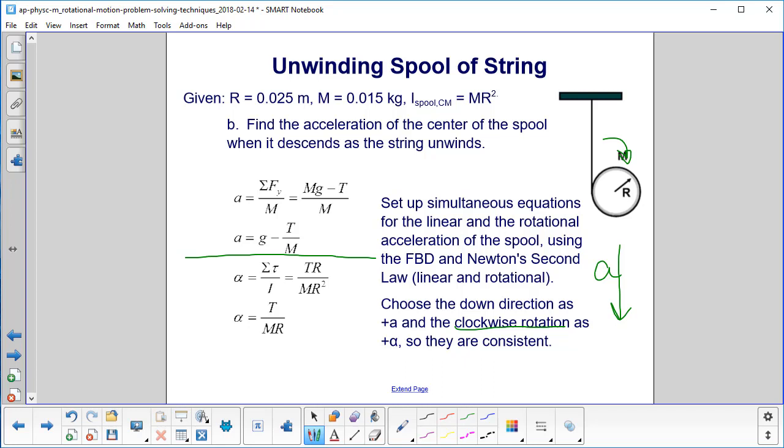So let's do the linear equations first. We sum the forces in the y direction. And from our free body diagram, we have mg down and tension up. So that will give us a negative for the tension, positive for mg. And we divide by the mass of the spool. So then we just go ahead and do a little algebra and we come up with this equation.